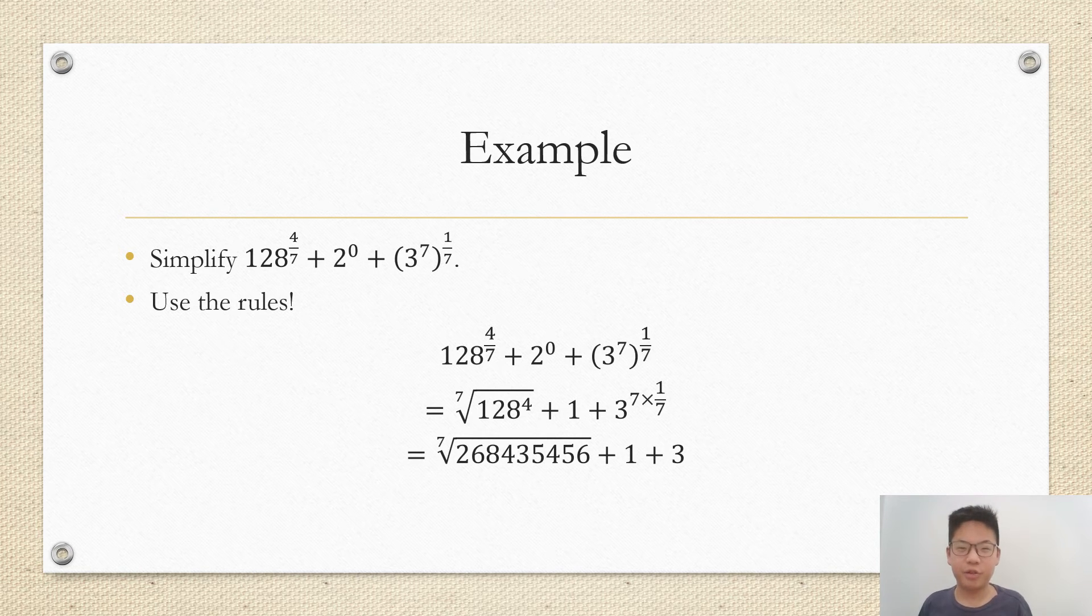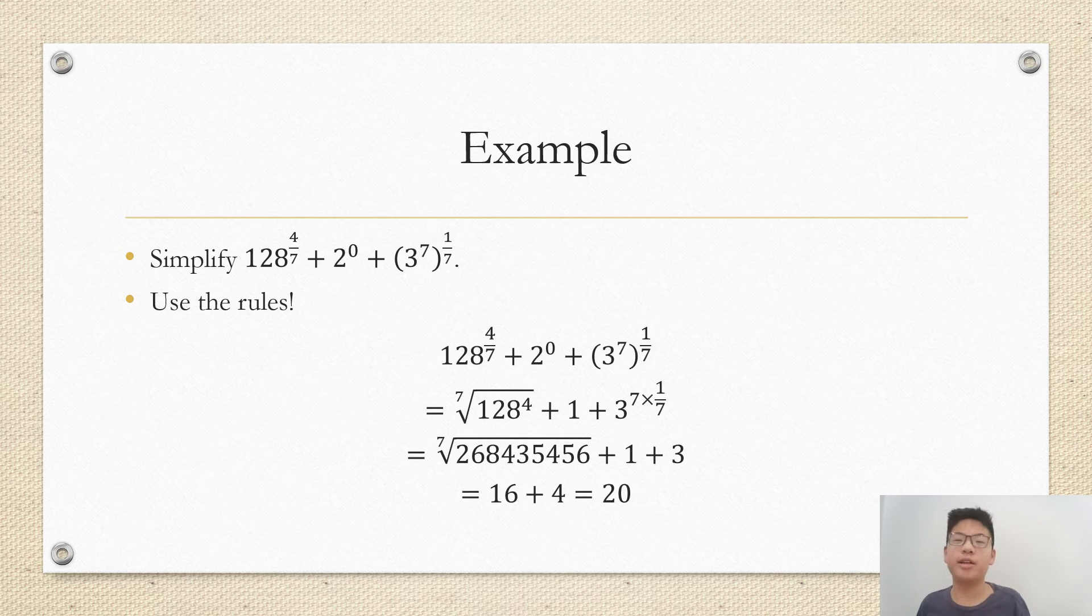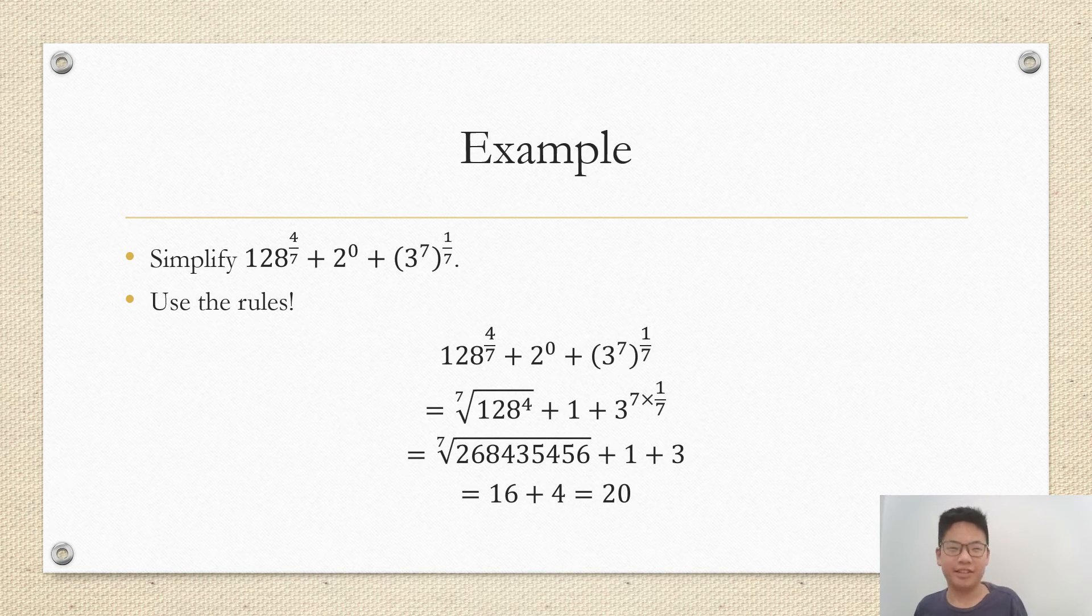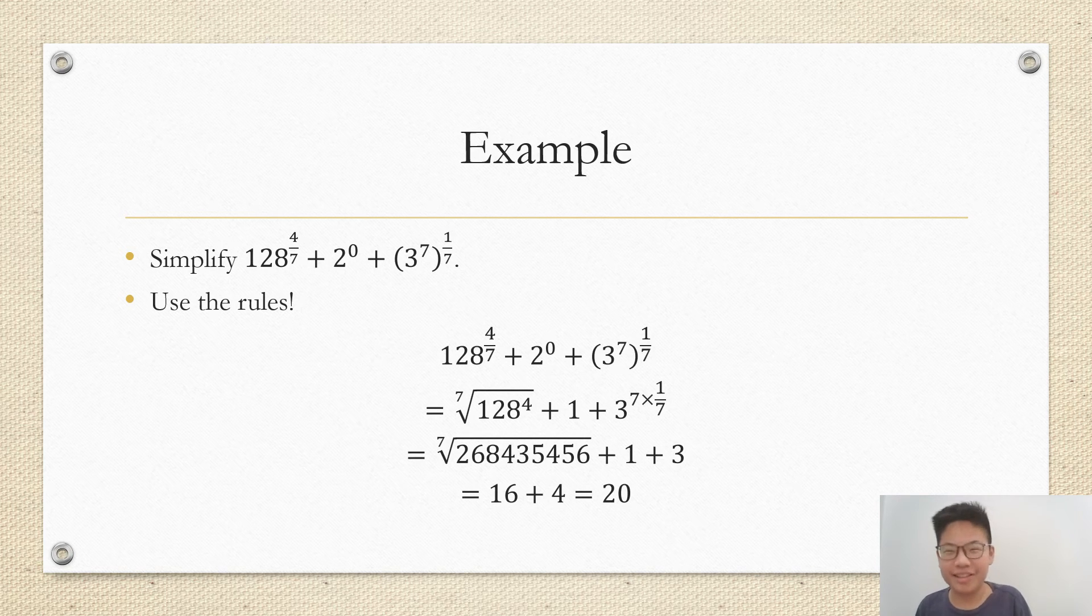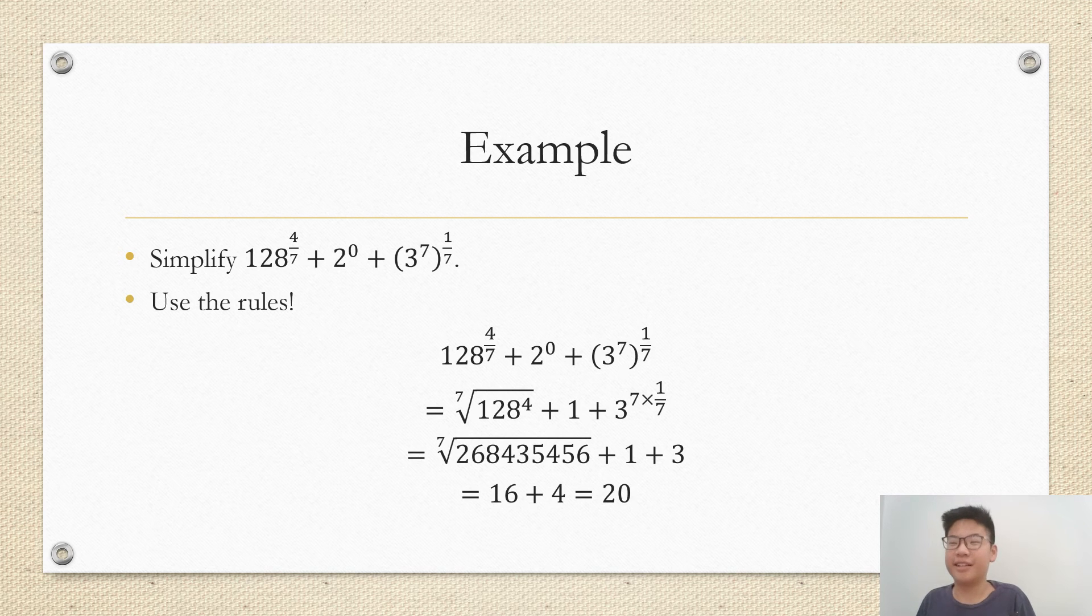Then we get 2 to the power of 26845456 plus 1 plus 3, and then you get 16 plus 4 equals 20. I'm not sure your calculator can handle 2 to the power of 26845456, but I'm just showing you this utterly large number just to show how powerful indices can be.